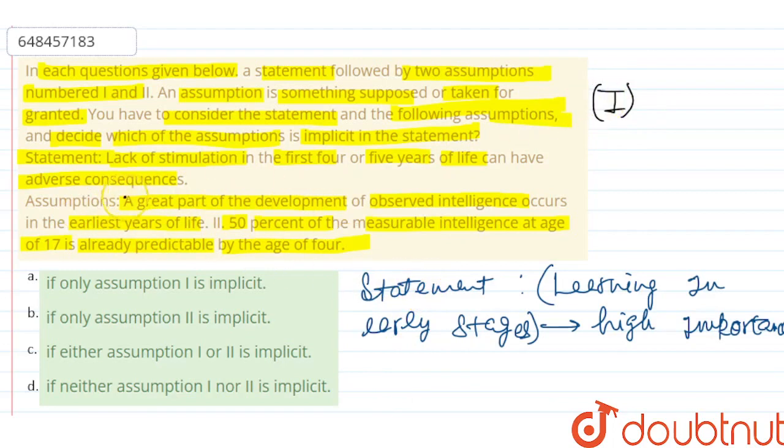So definitely assumption 1 - this is our assumption 1 - that a great part of development of observed intelligence occurs in the earliest years of life, this is definitely correct. This is implicit definitely.